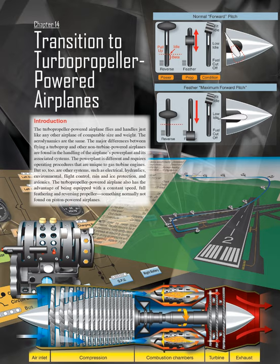Other systems are also different, such as electrical, hydraulics, environmental, flight control, rain and ice protection, and avionics. The turbopropeller-powered airplane also has the advantage of being equipped with a constant speed, full feathering and reversing propeller, something normally not found on piston-powered airplanes.